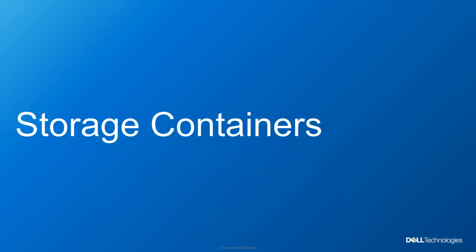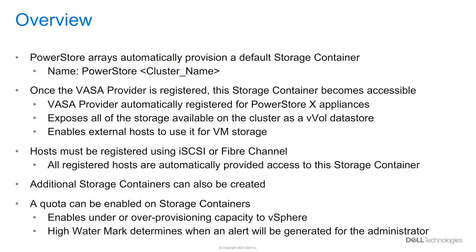Lastly, we will discuss storage containers. PowerStore automatically provisions a default storage container across all cluster capacity. When the VASA provider is registered for a PowerStore T appliance, this storage container becomes accessible and can be added as a vVol datastore. For PowerStore X, the VASA provider is automatically registered and the vVol datastore mounted as part of the initial configuration. The host needs to be registered using iSCSI or Fiber Channel, and once registered, they automatically provide access to the storage container. A user can also create additional storage containers, and a quota can be set with a high-water mark that triggers alerts based on capacity utilization.